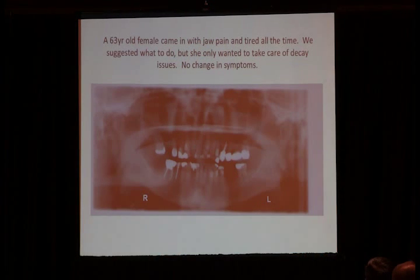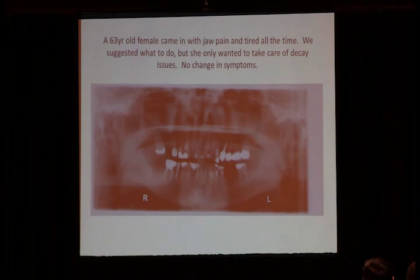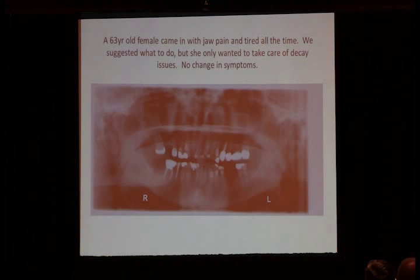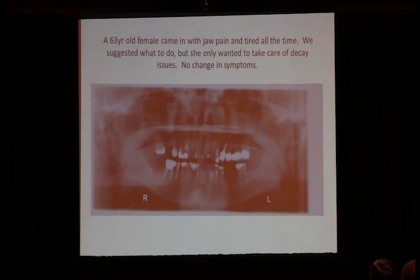Here's a case where a 63-year-old female had jaw pain and was tired all the time. We suggested what to do. She didn't want to do it — she just wanted the decay cleaned up, and no symptoms were changed for her health. You can plainly see why. Here's stomach, spleen, and pancreas. Again, large intestine and lung. Some more root canal work, and of course a lot of metal. But health means different things to different people.